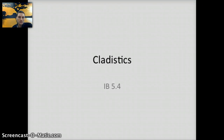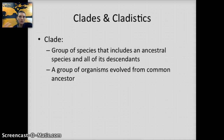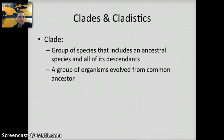In this video, we're going to cover section 5.4 for IB Bio, and we're going to look at the topic of clades and cladistics. Really what we're looking at is how organisms are organized and grouped into related species and ancestors. A clade is a group of species that includes an ancestral species and all of its descendants.